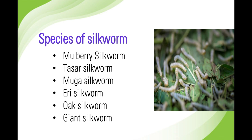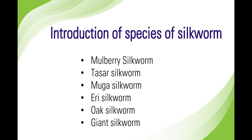The silkworm species are: first, mulberry silkworm; then tassar silkworm, muga silkworm, eri silkworm, oak silkworm, and lastly giant silkworm. Introduction of species of silkworm — first one is the mulberry silkworm.